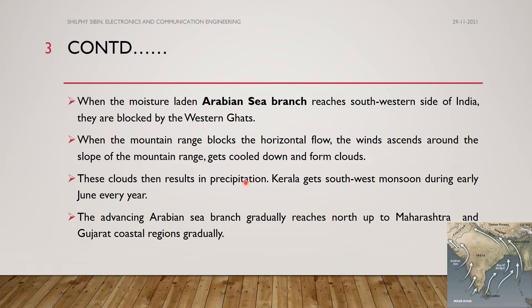The Arabian Sea branch advances gradually northward and reaches up to Maharashtra as well as the Gujarat coastal regions, providing heavy rainfall.